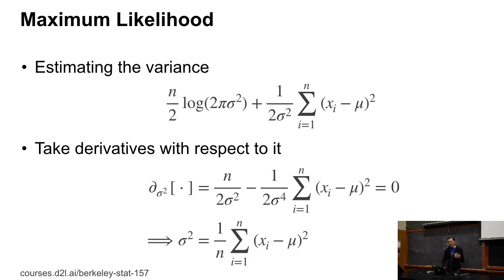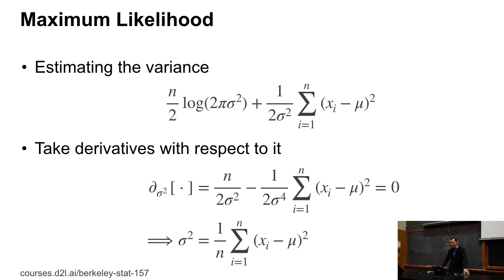Now if I want to do the same for the variance, I take the derivative with respect to σ², which avoids a long and tedious expression. Setting the derivative to zero: d/d(σ²) = n/(2σ²) − (1/(2σ⁴))·Σ(xi − μ)² = 0. Solving for σ² gives exactly the well-known variance estimator.